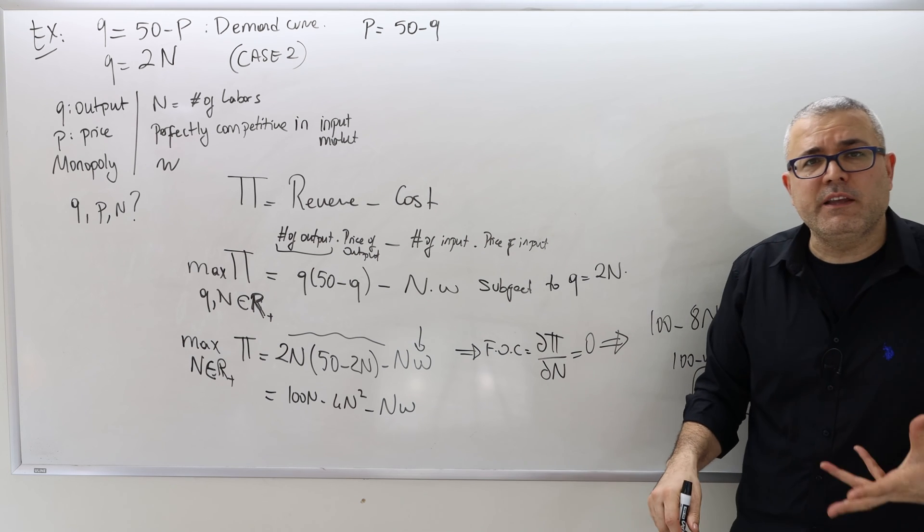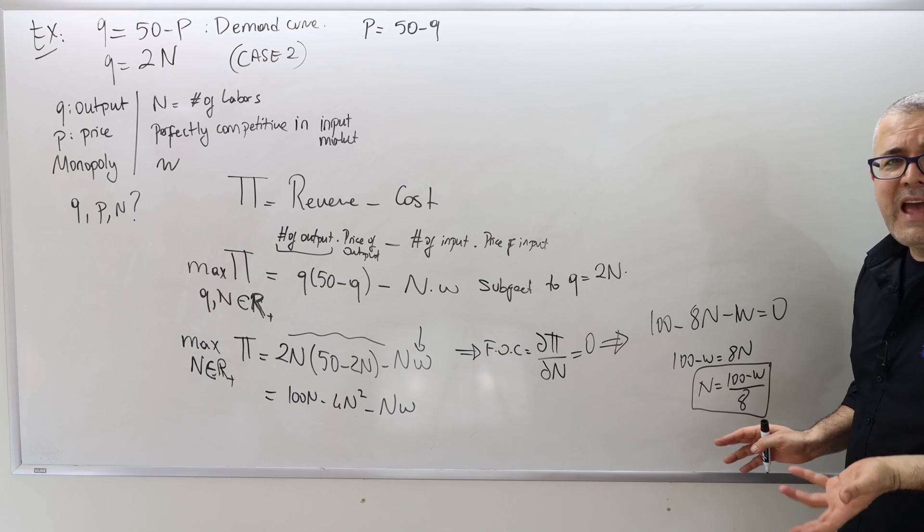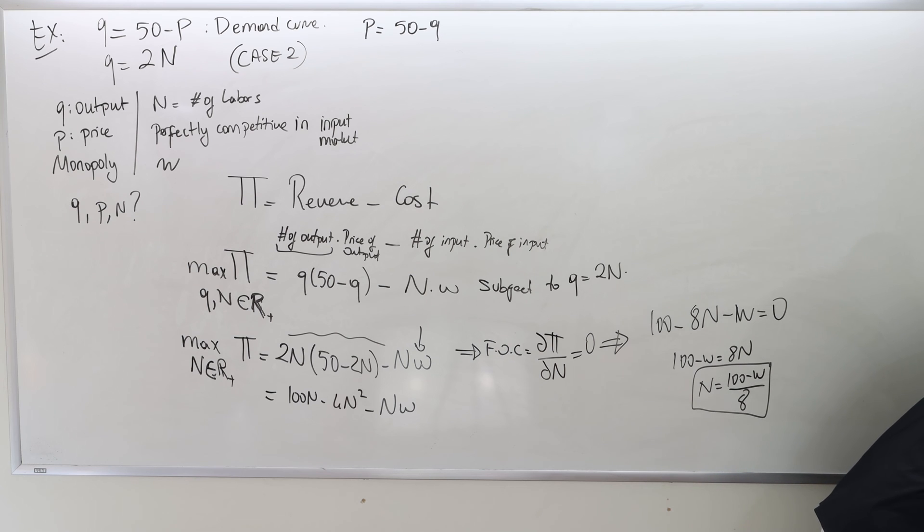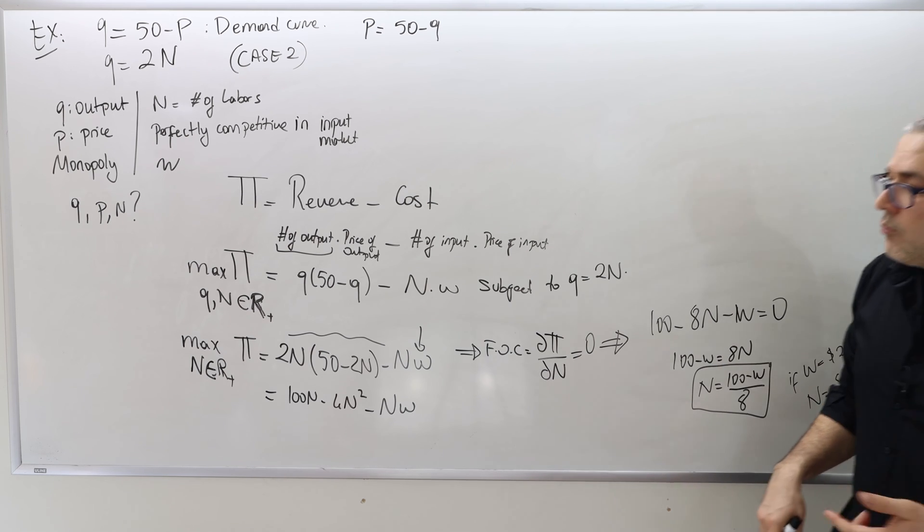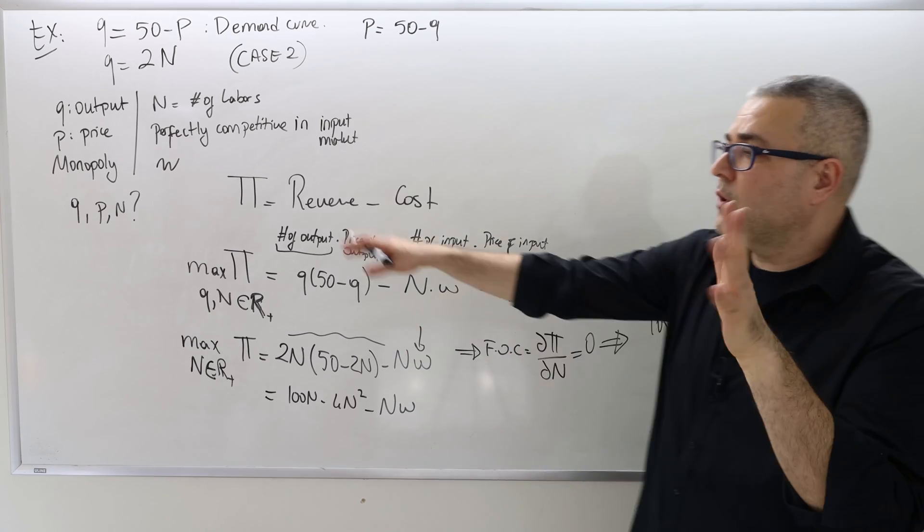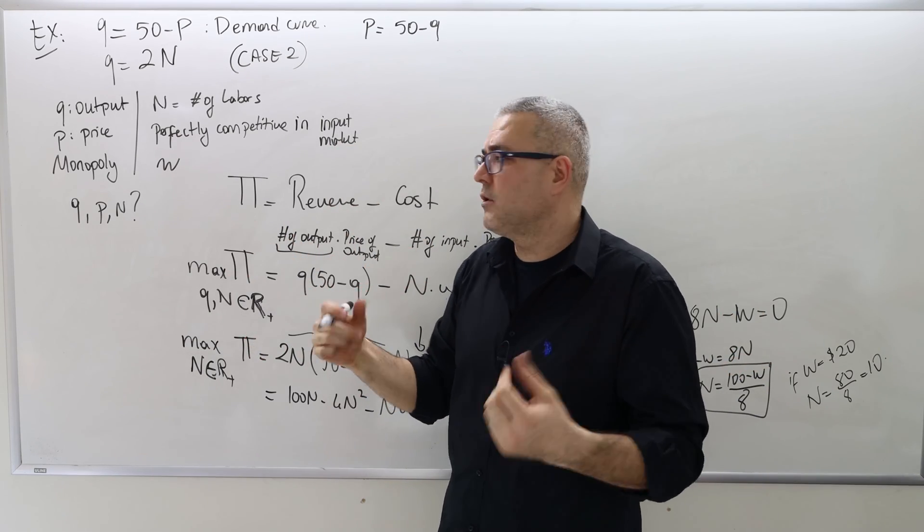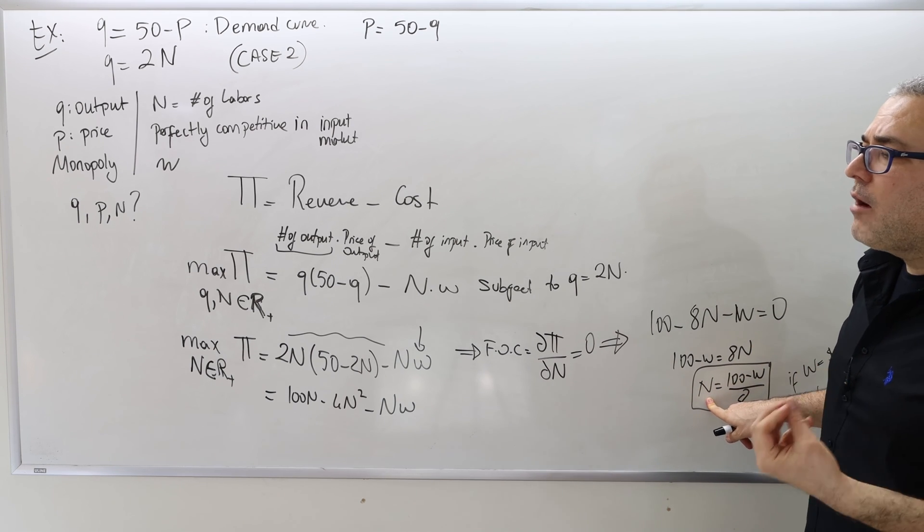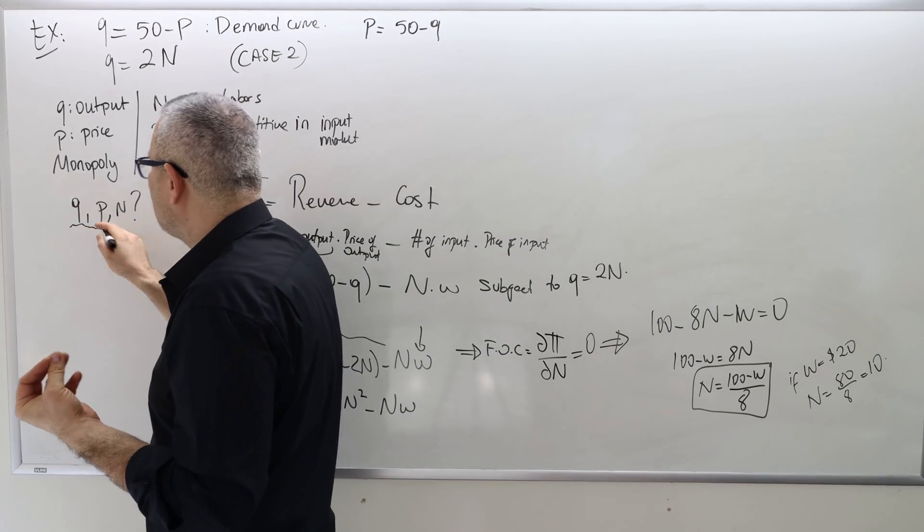So you tell me what the W is, I can tell you what the number of N should be. And in fact, let me check. The question part B says, if W is, for example, $20, what is the optimal N? Well, simple, 100 minus 20, 80 divided by 8, so only 10 labors. But let's keep W as W, because if you change W, the N will be different, the Q and P will be different.